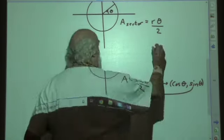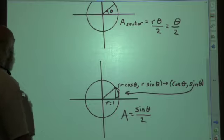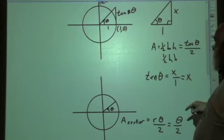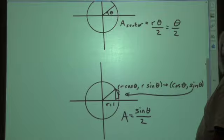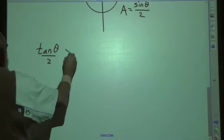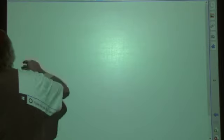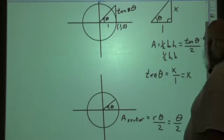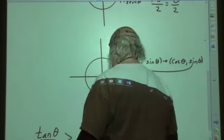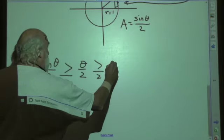What is R here? R is 1, so the sector area is just theta over 2. The outer triangle is biggest since it's outside, and the inner triangle is the smallest, so we have the hierarchy: tangent theta over 2 is greater than or equal to theta over 2, which is greater than or equal to sine theta over 2.